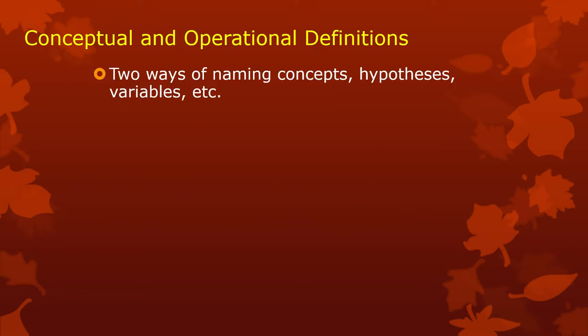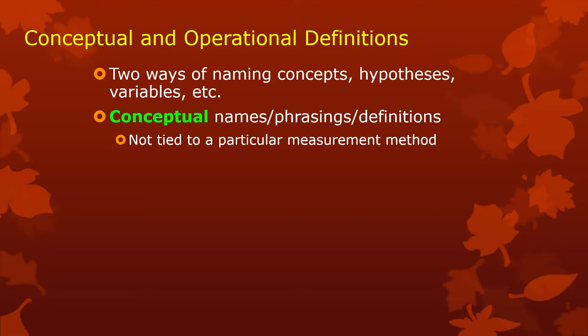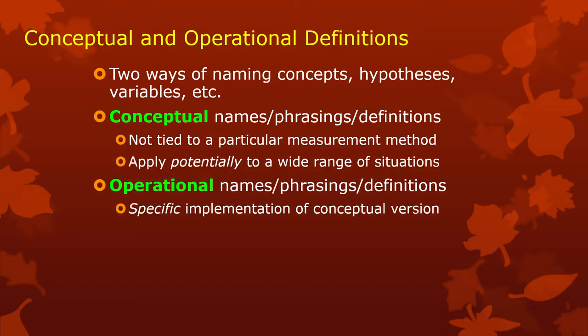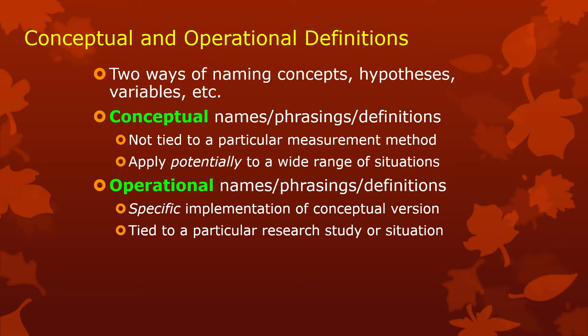Let's tackle conceptual and operational definitions. In research endeavors, we have two ways of naming what we're talking about for almost all of our concepts — specifically our variables, our hypotheses, our processes or relationships between the variables. There are conceptual ways of doing this and there are operational ways of doing this. Conceptual ways usually come directly from the theory; this is not tied to a particular way of doing things. It's a really vague and general way.